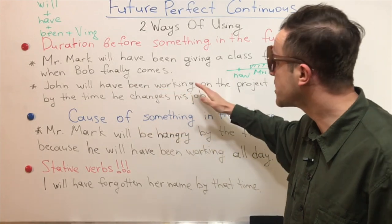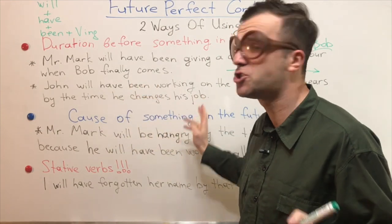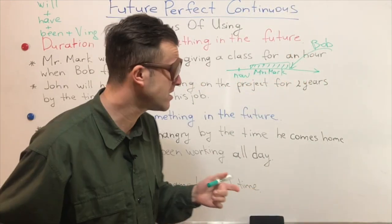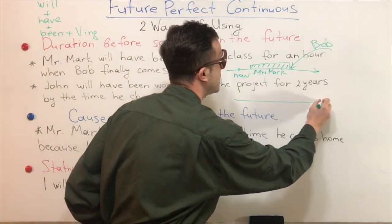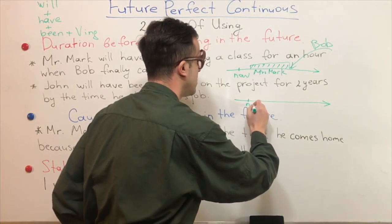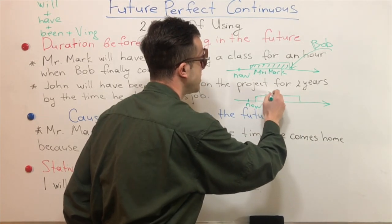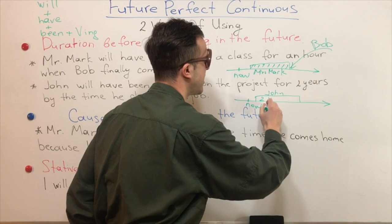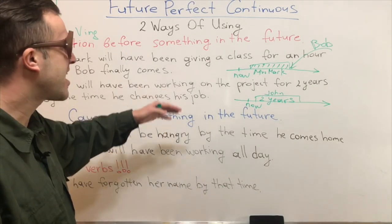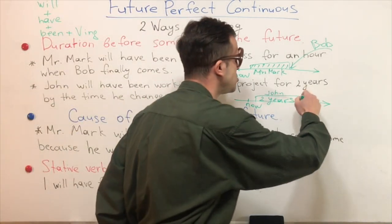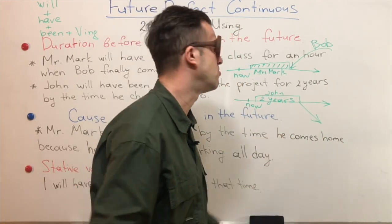Let's move on to the next example: 'John will have been working on the project for two years by the time he changes his job.' Let's illustrate it in the graph. Here is 'Now,' and here is John — he will be working for two years of hard labor, and then after two years, he will change his job.